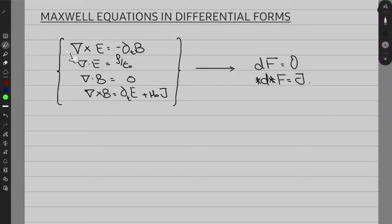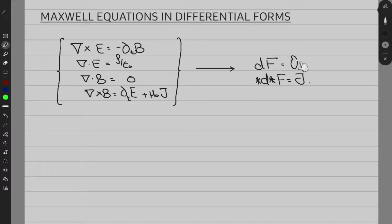In this video, we will be transforming our four Maxwell's equations into these two equations that you see over here. This is the language of differential forms. You might ask, what's the use of doing this? What is the advantage? What do we get out of this?